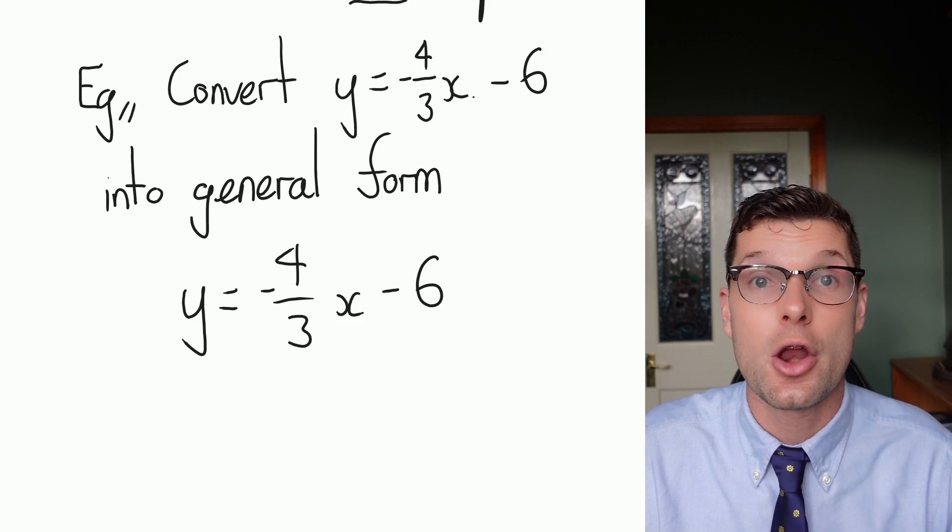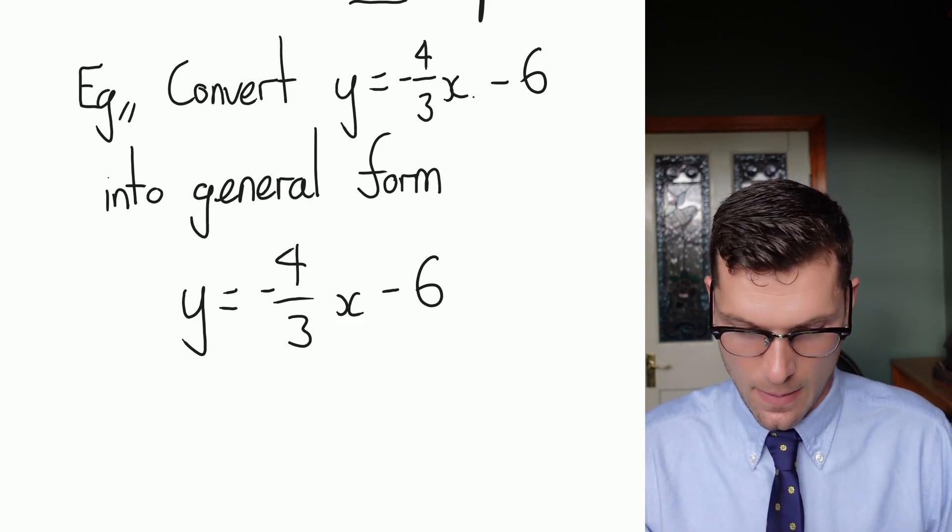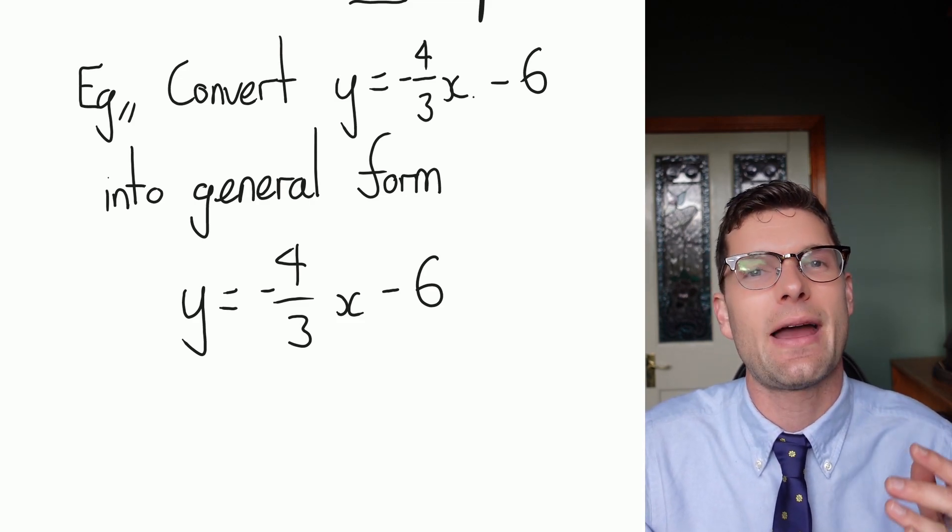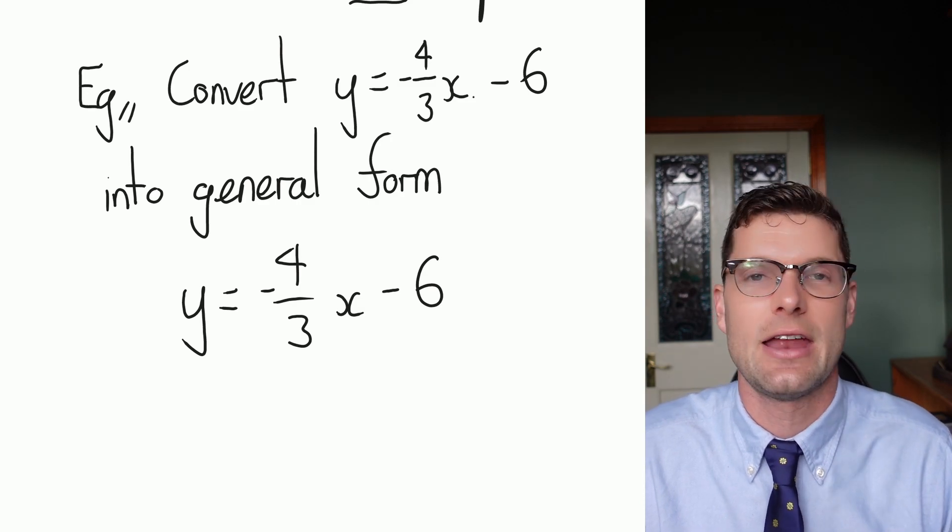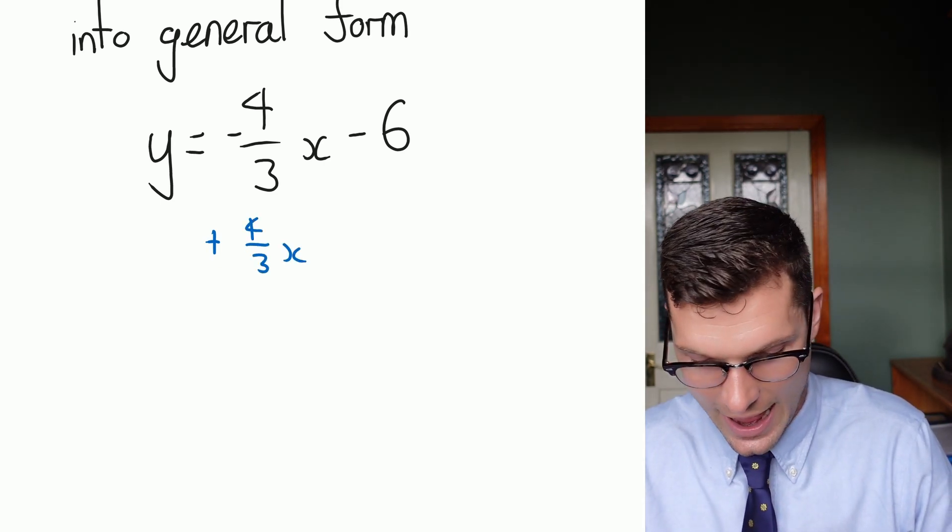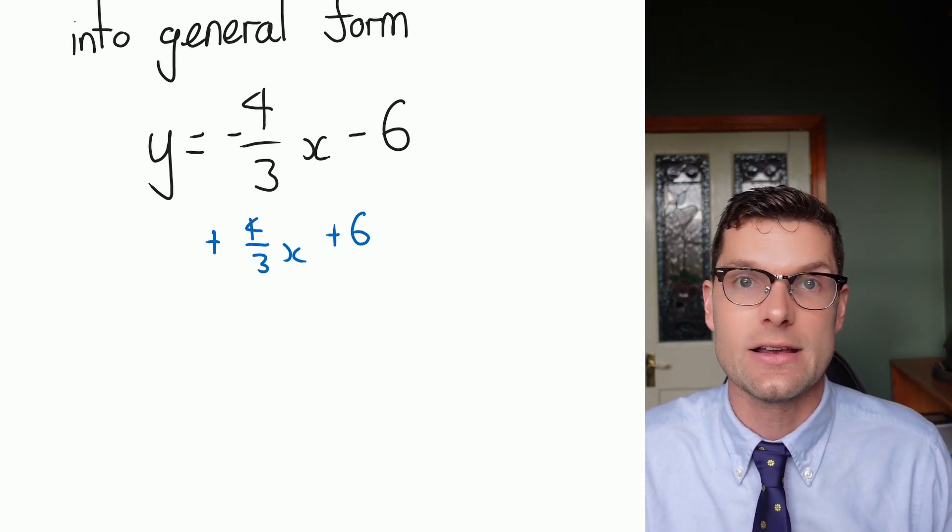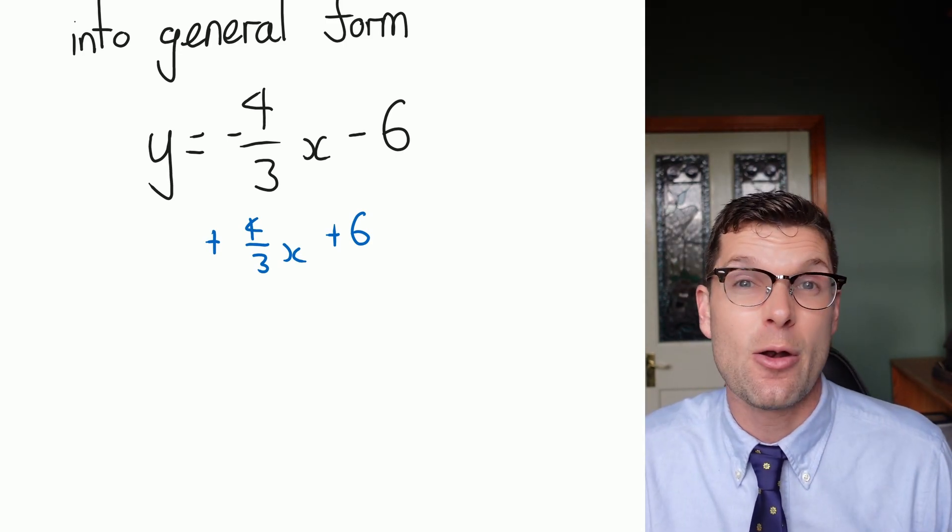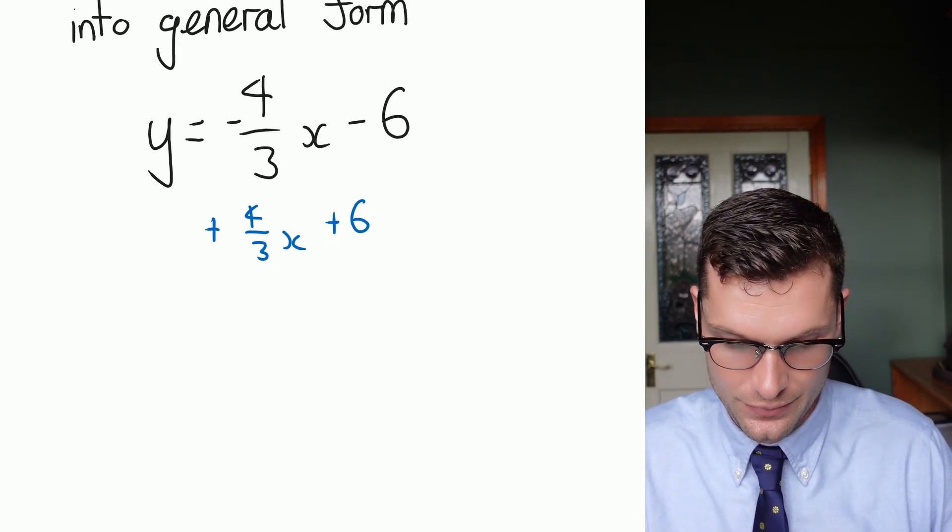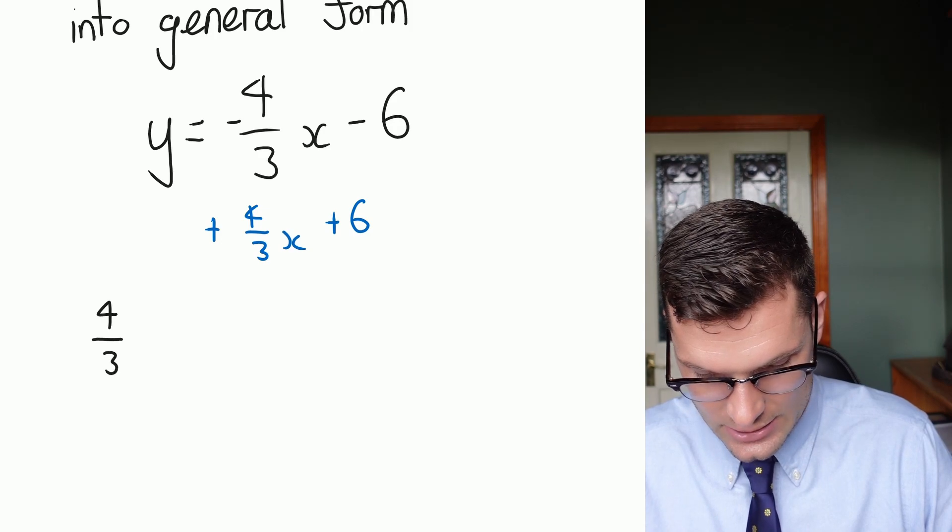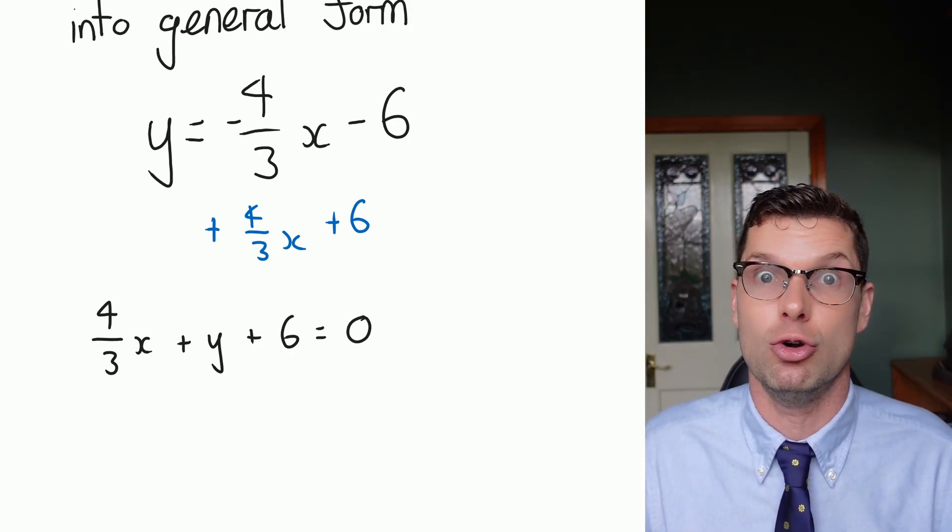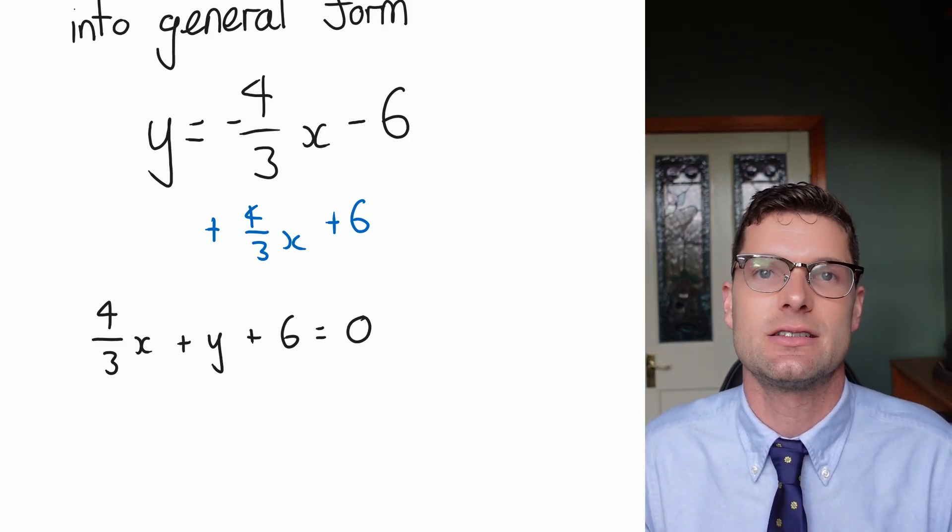So you're going to get questions like this. Convert y = -4/3x - 6 into the general form. All we've got to do here is make sure that we are following those three rules and you're going to find it nice and easy. So the first step that we have to do is we've got to add 4/3x and add 6 all over to that y side. I'm going to straight away write it with the x term first. But if you leave that to the last step, that's totally fine. So now I've got 4/3x + y + 6 = 0. So that is my first rule done. I have 0 on one side. Happy days.